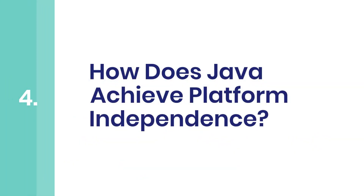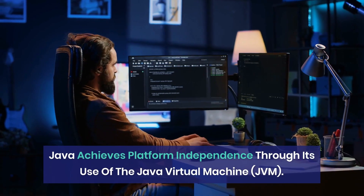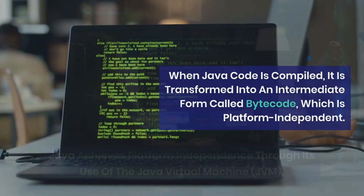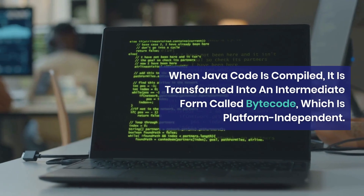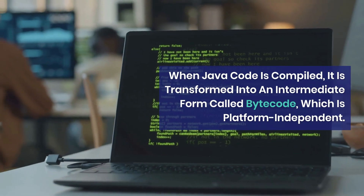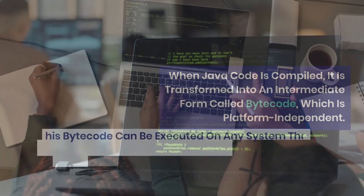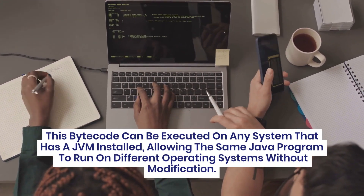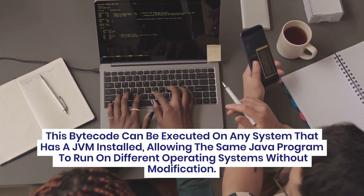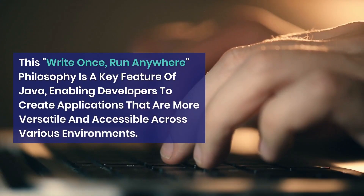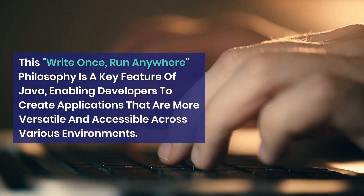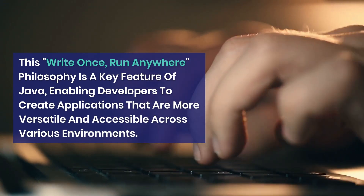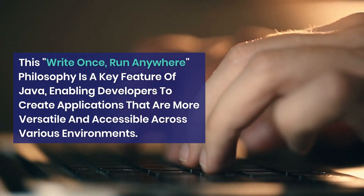Question 4: How does Java achieve platform independence? Java achieves platform independence through its use of the Java Virtual Machine, JVM. When Java code is compiled, it is transformed into an intermediate form called bytecode, which is platform independent. This bytecode can be executed on any system that has a JVM installed, allowing the same Java program to run on different operating systems without modification. This 'write once, run anywhere' philosophy is a key feature of Java, enabling developers to create applications that are more versatile and accessible across various environments.